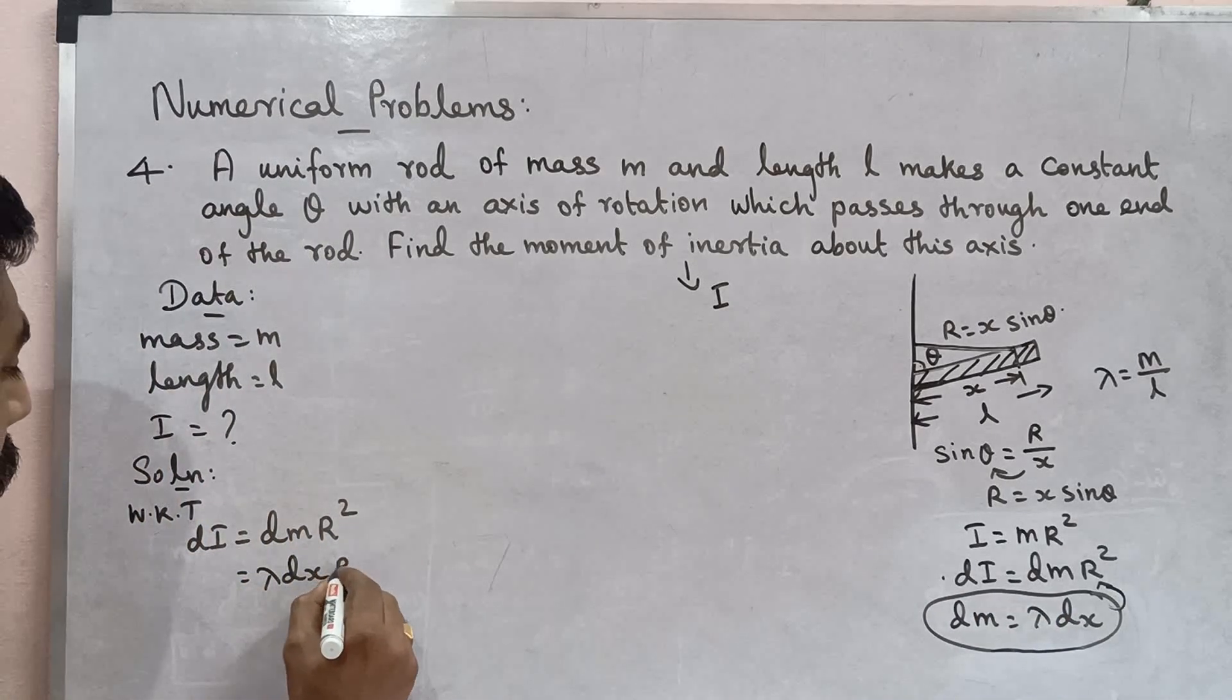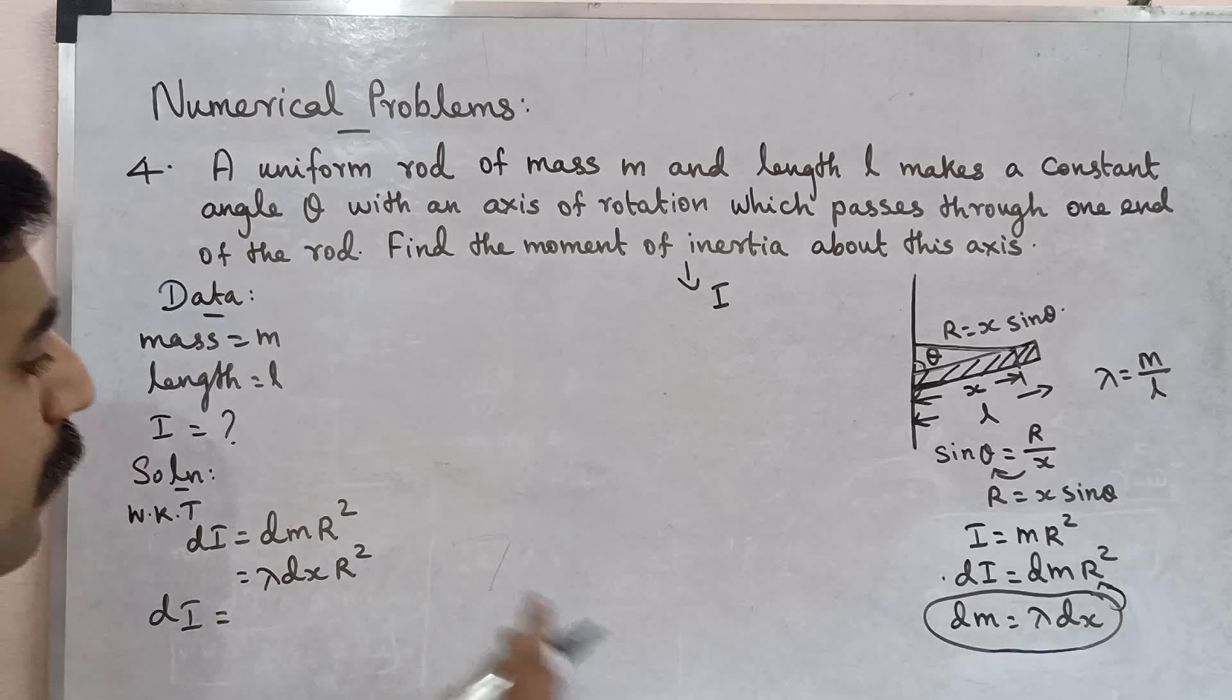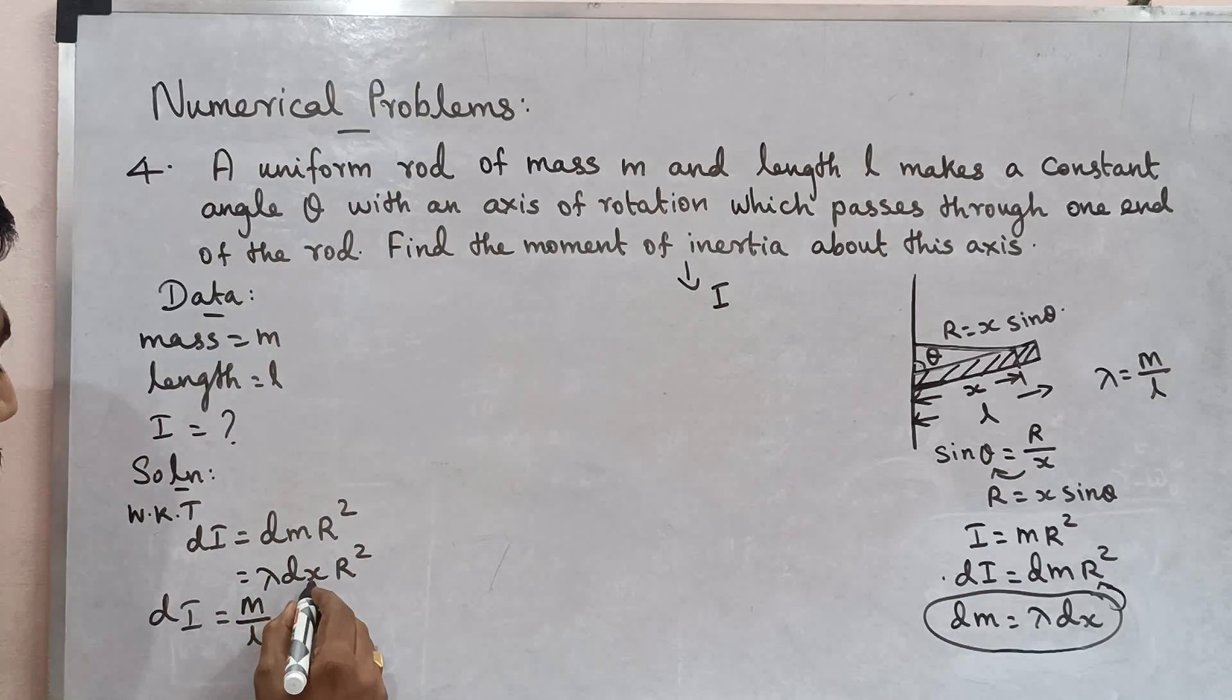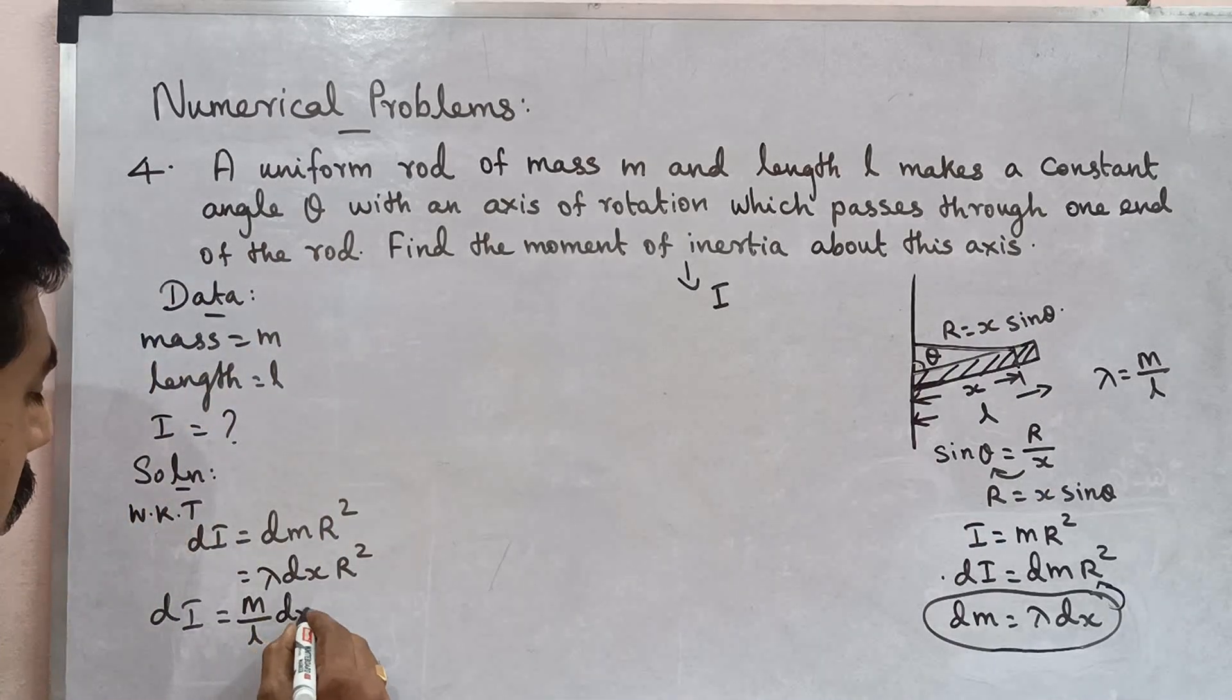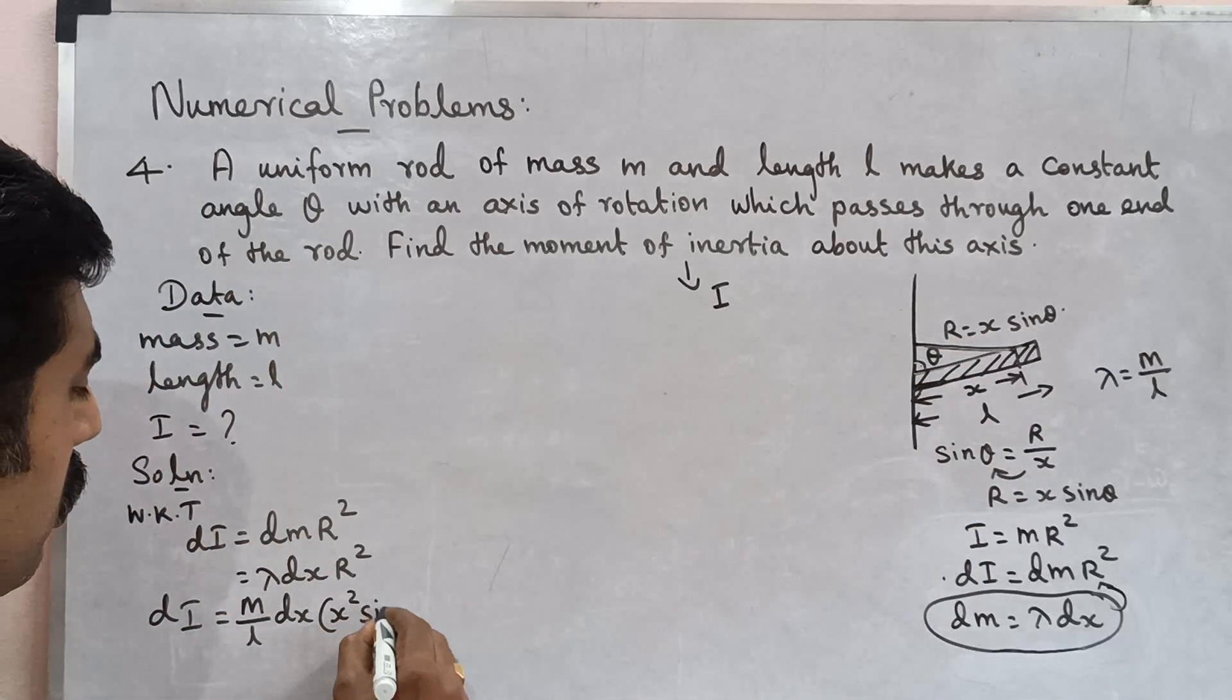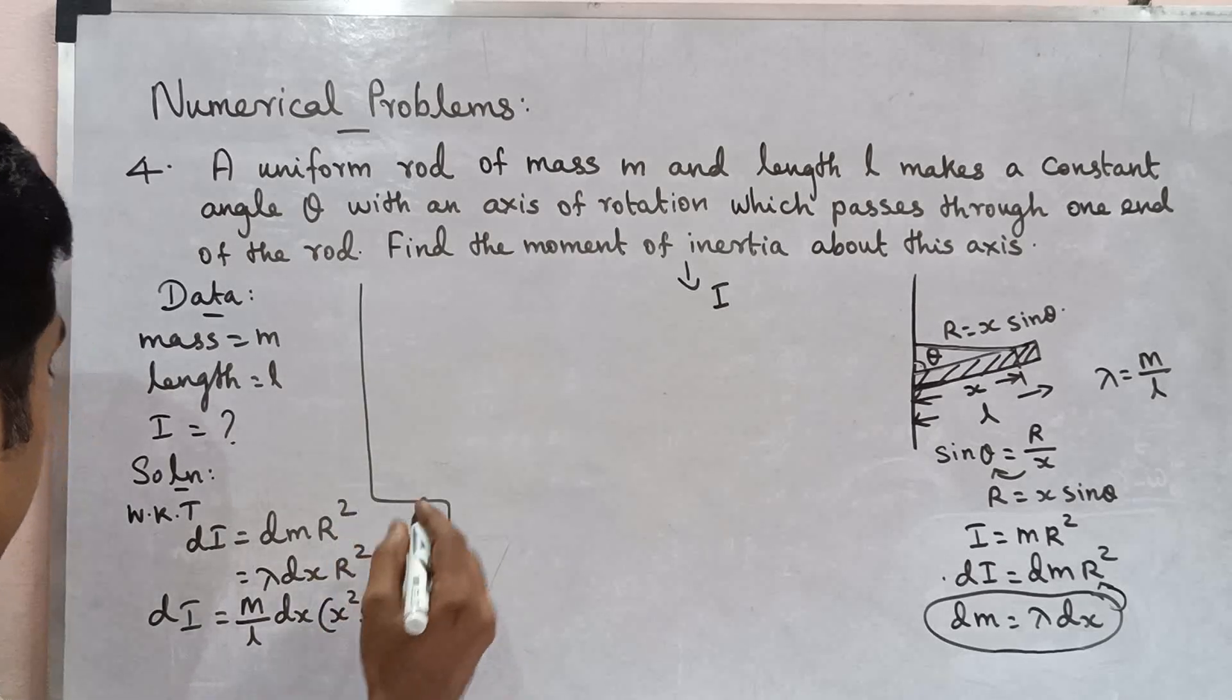So dI is equal to lambda is m by L, m by L dx. R square is there. R can be x sin theta. Dx will be there. R can be x sin theta square. x square sin square theta.